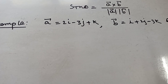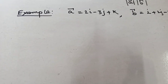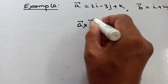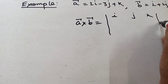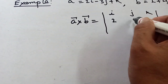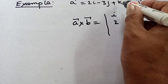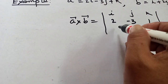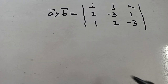a cross b means the cross product of vectors — you will apply the determinant like this. a cross b equals the determinant with i, j, k in the first row. Here you write the vector coefficients of i, j, k — that means 2, minus 3, 1 for vector a (coefficient of i is 2, coefficient of j is minus 3, coefficient of k is plus 1). And for b vector the coefficients are 1, 2, minus 3. Now apply the determinant rule.